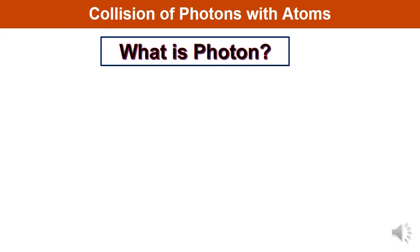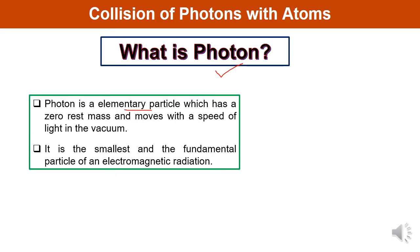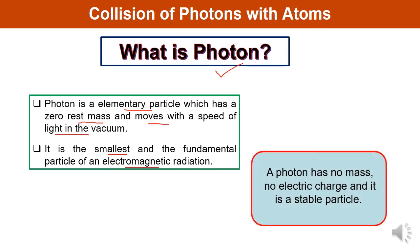The next topic is collision of photons with atoms. To understand this concept, first let us understand what a photon is. A photon is an elementary particle which has zero rest mass. It moves with the speed of light in vacuum. A photon is the smallest and fundamental particle of electromagnetic radiation. A photon has no mass, no electric charge, and it is a stable particle.